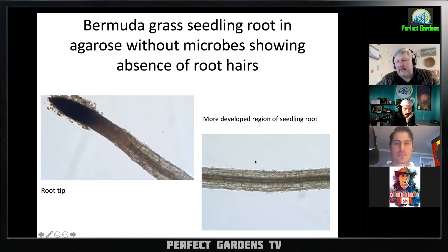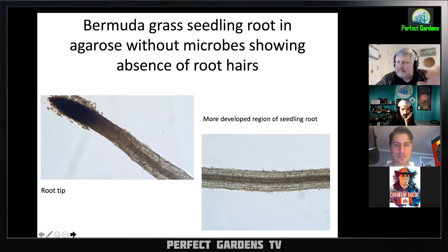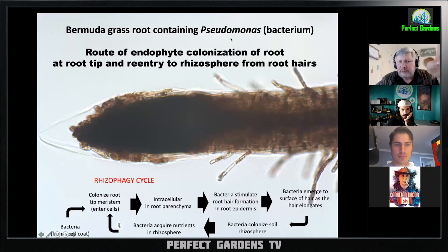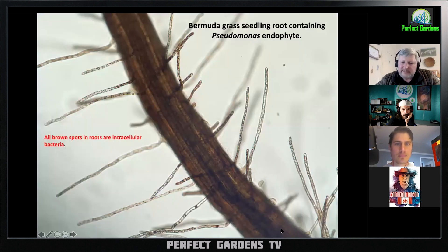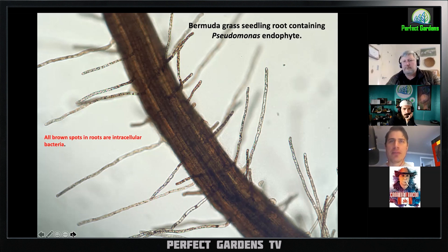To show that, here's a Bermuda grass where we removed all the microbes — you can see no hairs forming on the roots of the seedlings. But in the same experiment, we put a pseudomonas bacterium on it, and you can see hairs forming immediately. In an older bit of root you can see little brown dots — those are bacteria inside the root hairs.